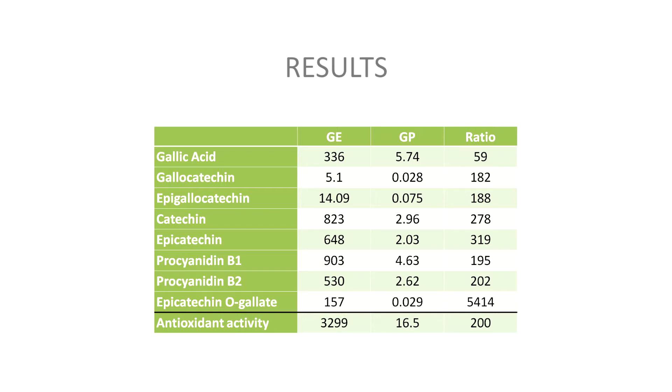We see that the antioxidant activity of the standardized grape extract is 200 times higher than the one of grape pumice. This is probably due to the big difference in composition.